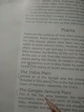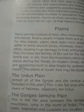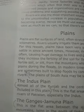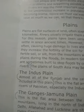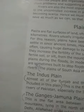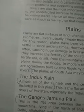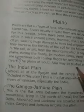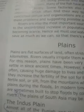The next one is the Ganges-Jamna Plain. This is the flat area between the Himalayas and Vindhya mountains, lying in the north of India. The famous cities of Delhi, Allahabad, and Lucknow are situated in this region. The rivers Ganges and Jamna irrigate this plain.